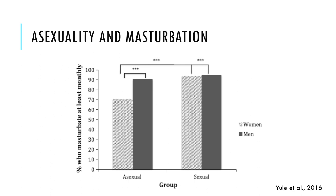In a large sample of asexual men and women, Yule and colleagues investigated how many masturbated at least on a monthly basis and compared these figures with a sample of sexual men and women. Results show that around 90% of sexual men and women masturbated at least monthly, a prevalence not different from that of asexual men. However, in the asexual female sample, 70% of women masturbated regularly, significantly lower than both the sexual sample and asexual men. We can conclude that the large majority of asexual people have autoerotic practices on a regular basis.